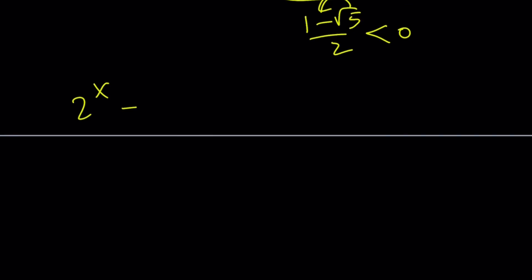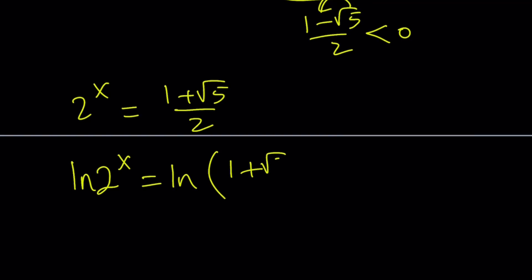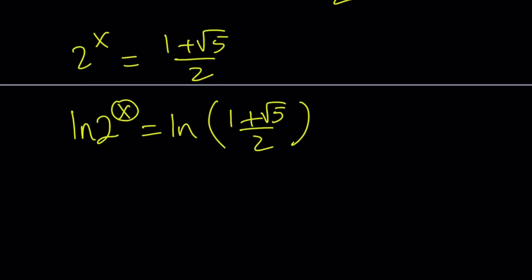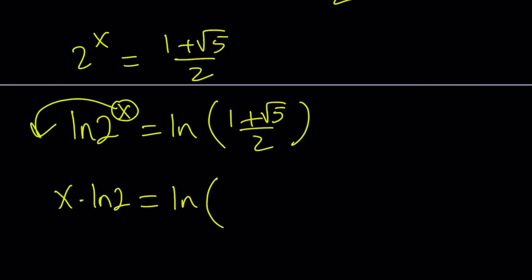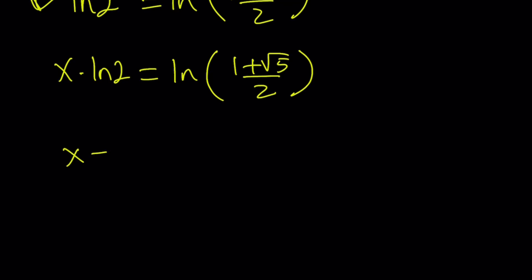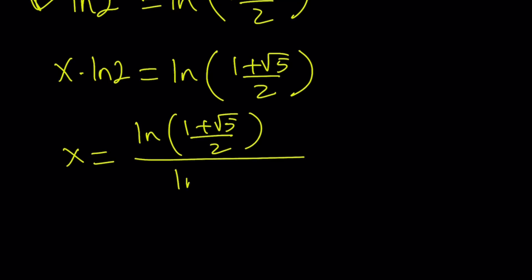If we have 2 to the power x equals 1 plus root 5 over 2, we can take the natural log of both sides. Here x moves to the front: x times ln 2 equals ln of the quantity 1 plus root 5 over 2. And by division, x equals ln of 1 plus root 5 over 2, divided by ln 2. You could also write this as log base 2 of 1 plus root 5 over 2 - it's the same thing.